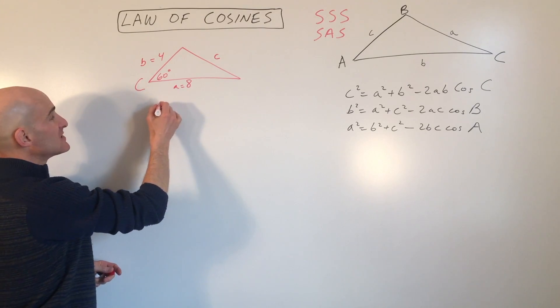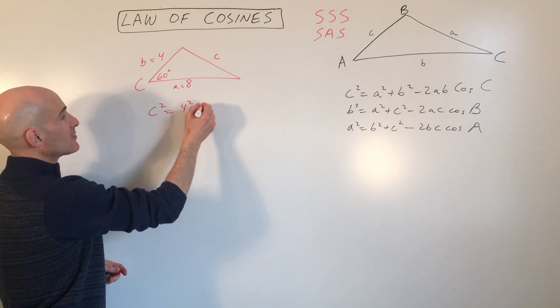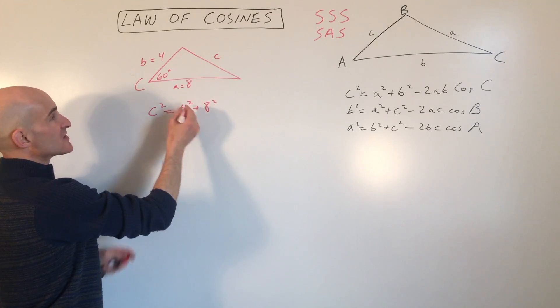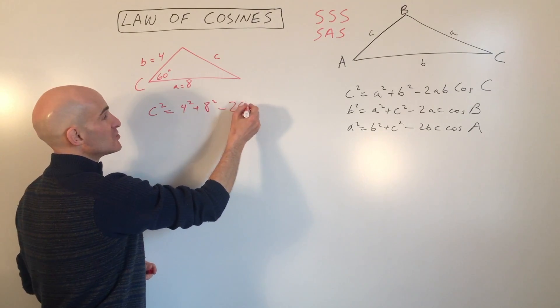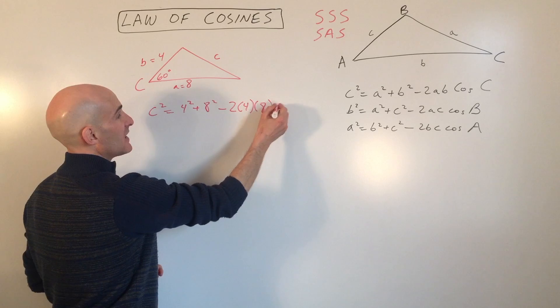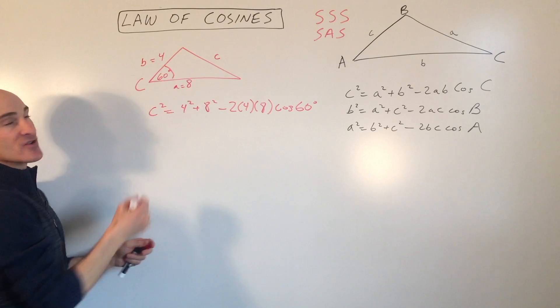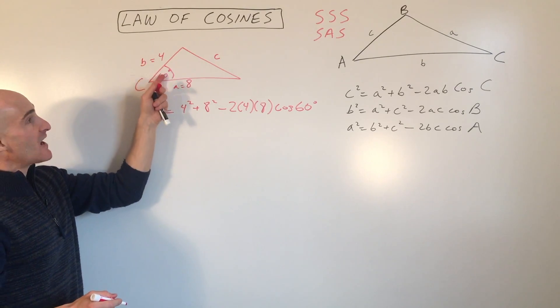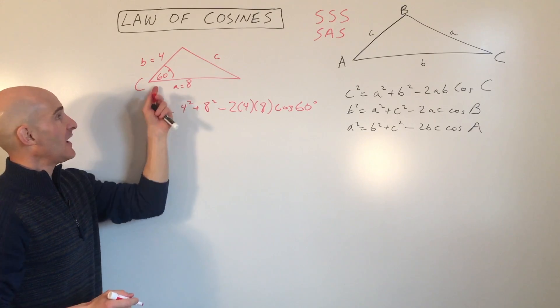So what we have here is we have C squared equals 4 squared plus 8 squared, so the two sides squared that make up that angle, minus 2 times 4 times 8 times the cosine of the included angle here, 60 degrees.